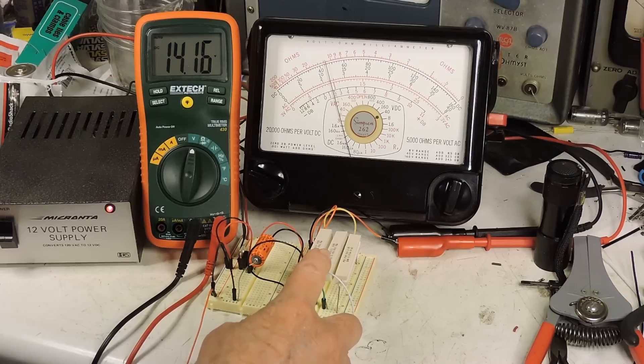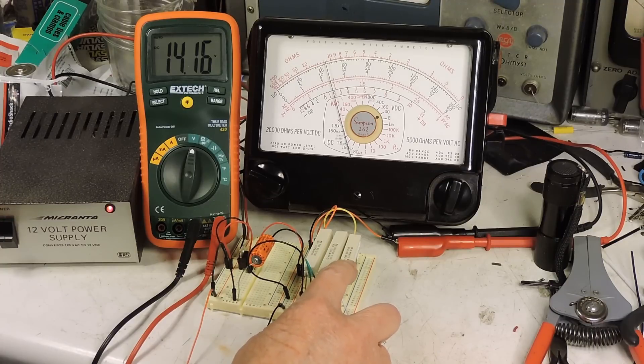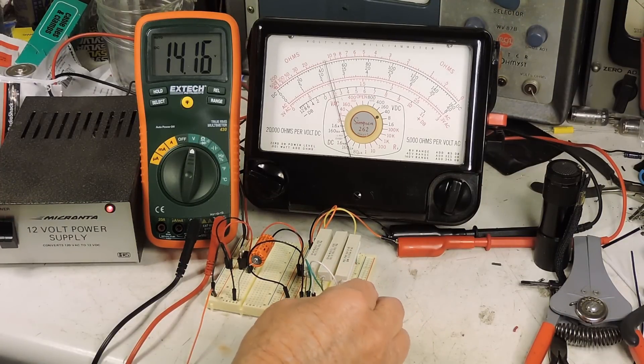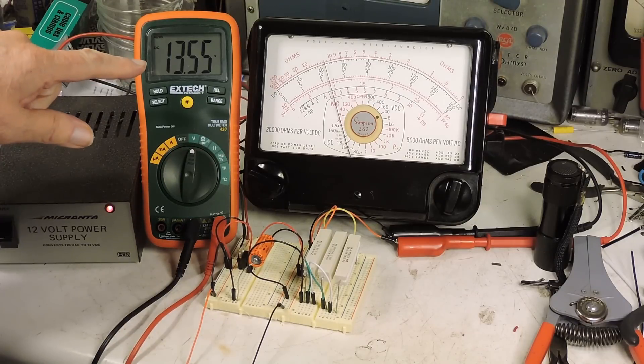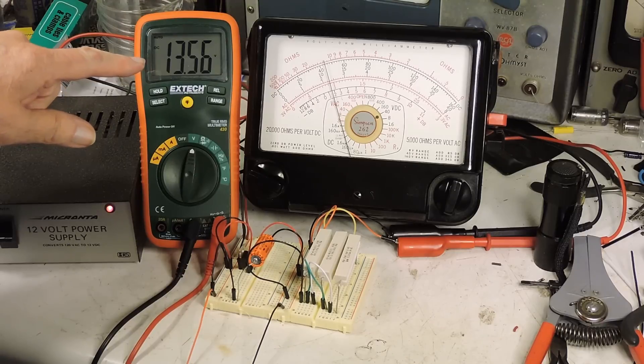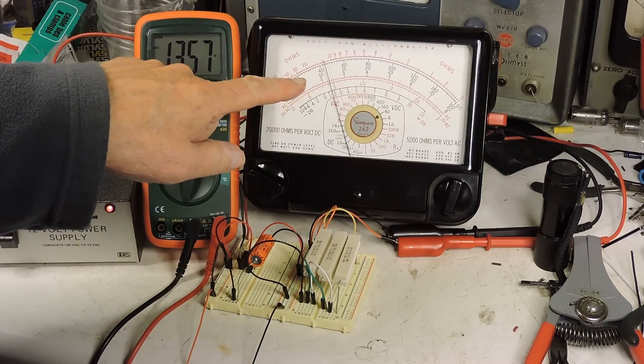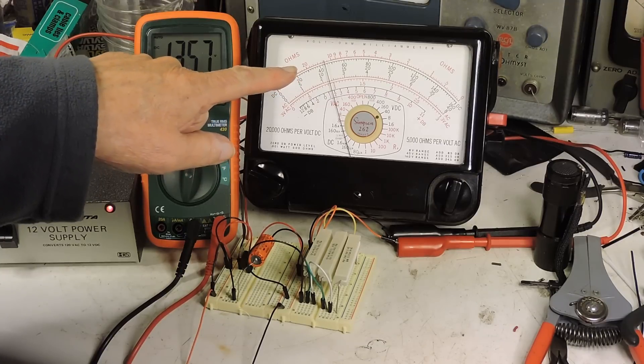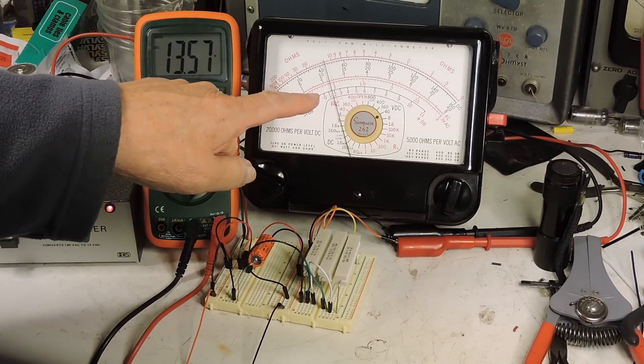So now we've got 50 ohms across the load. This is another 50 ohm resistor. So I am going to add that on to it. So now we've got 25 ohms across the load. And as you can see this reads 13.5. And this reads about 12.3. So almost no movement over here.